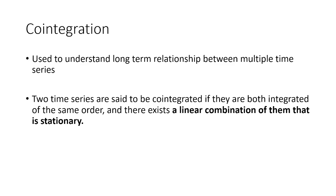To understand co-integration, let's first understand what it means, when it is used, and why we use it when other time series techniques are available. Co-integration is a technique used to understand the long-term relationship between different time series. In time series analysis, univariate models — such as ARIMA, autoregressive, and moving average models — are more popular.